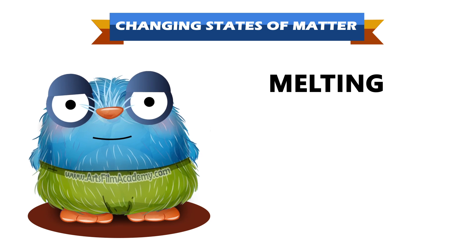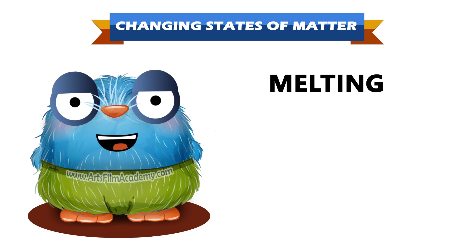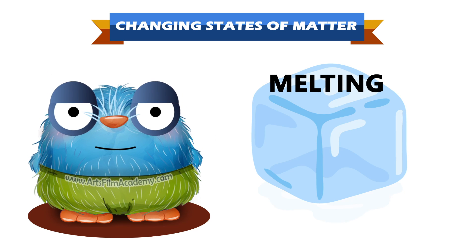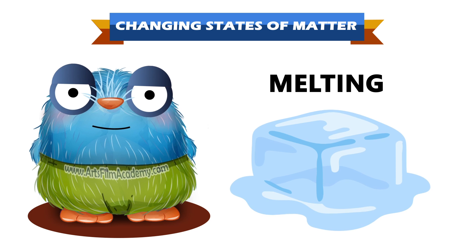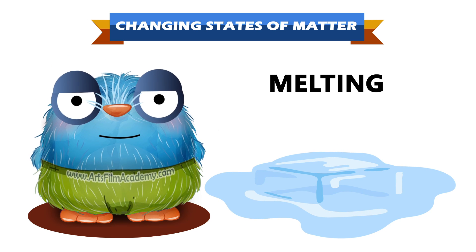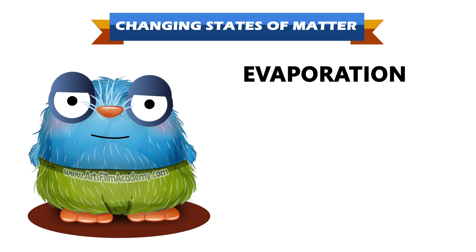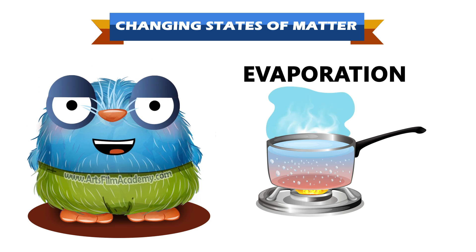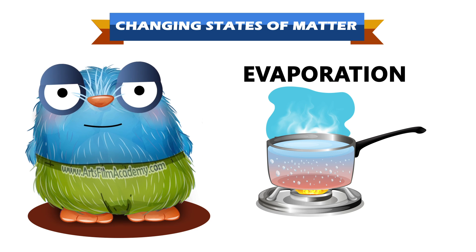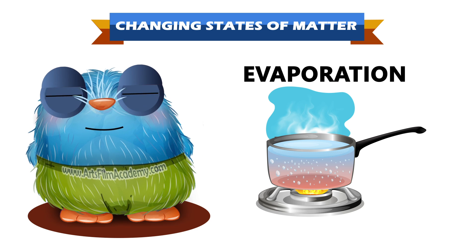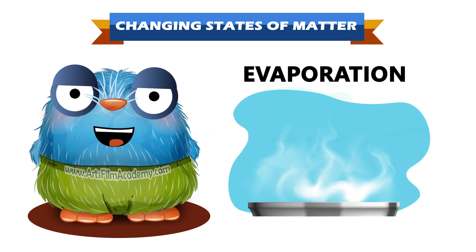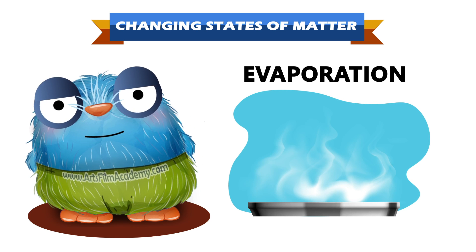Melting — matter changes from solid to liquid. For example, ice cube to water. Evaporation — matter changes from liquid to gas. For example, when water is heated, it turns into water vapor.